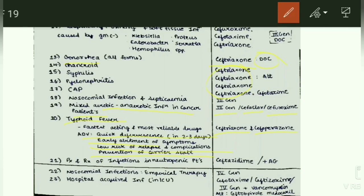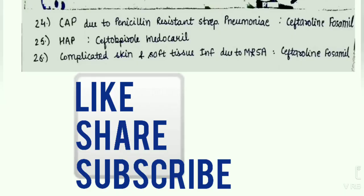Prophylaxis and treatment of infections in neutropenic patients — ceftazidime along with an aminoglycoside. Nosocomial infections as empirical therapy — fourth generation cephalosporins. Hospital-acquired infections in the ICU — cefotaxime, ceftriaxone, and fourth generation along with vancomycin; alternatively ceftobiprole medocaril can be used. CAP due to penicillin-resistant Strep pneumoniae — ceftaroline fosamil. HAP — ceftobiprole medocaril. Complicated skin and soft tissue infections due to MRSA — ceftaroline fosamil.